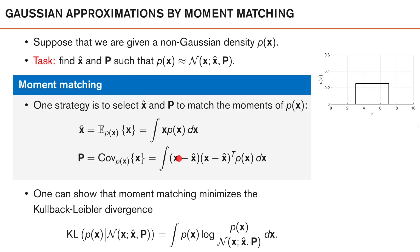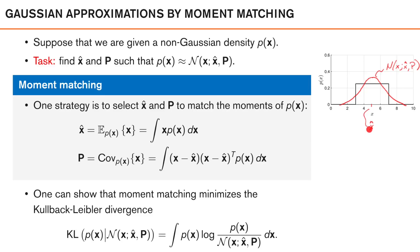We ensure that x-hat is the mean of p of x and that capital P is the covariance of p of x, which can be expressed as follows. x-hat is the integral of x times p of x dx, and capital P is the integral of x minus x-hat times x minus x-hat transpose times p of x dx. In order to do moment matching, we basically need to calculate these two expected values expressed by these two integrals. For the example shown, the mean of the Gaussian would be in the middle, and the bell-shaped Gaussian approximation would look roughly like this.